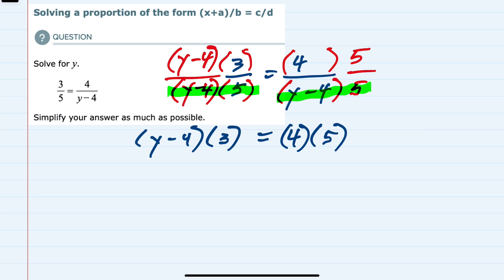But now that we have this written without any fractions, I can solve by first simplifying each side. On the left-hand side, this 3 needs to be distributed, so 3 times y is 3y, and 3 times minus 4 is minus 12, equals, on the right-hand side, I'm just multiplying 4 and 5, so 20. And then to continue solving,